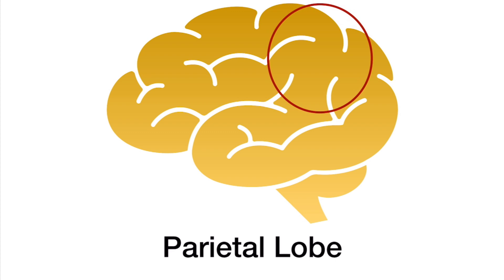Going behind that is the parietal lobe, which handles body awareness and spatial orientation. It does a little bit of regulation of sensory information, and interestingly, numbers and some reasoning and mathematics are considered to be in that area as well.